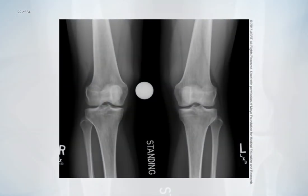The following quality criteria should be used to determine if a weight-bearing AP knee radiograph has been produced with proper positioning and technical factors. Collimation does not obscure relevant anatomy. Both knees are included on the image and the knee joint spaces are centered. There is no rotation of either knee.